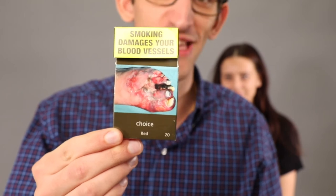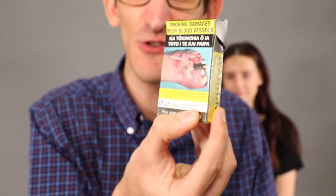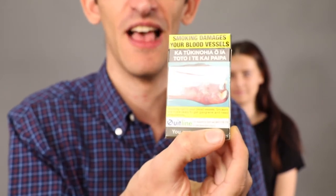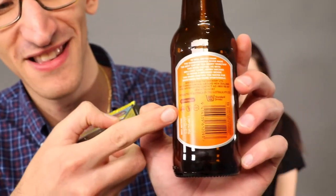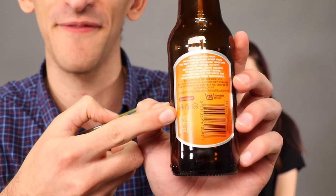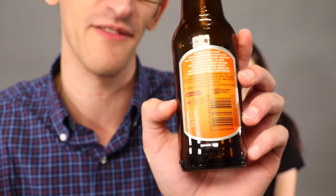I'll show you an example of the smoking warnings we currently have. They're huge and they're relatively hard to miss. When we compare that to what we've got in our alcohol bottles, it's significantly smaller. You can see here you really have to go looking for it to find the pregnancy and drink driving warnings.